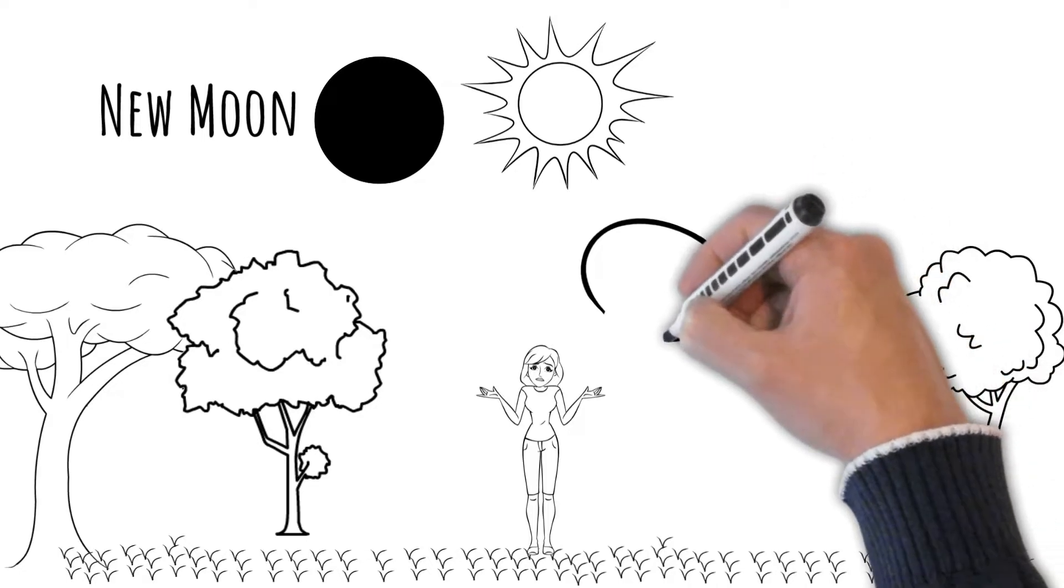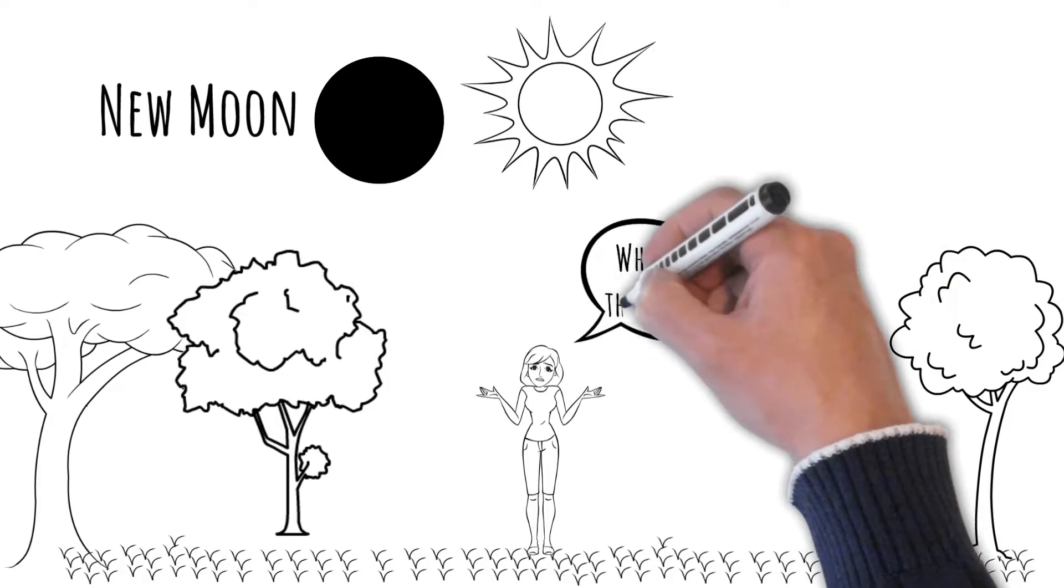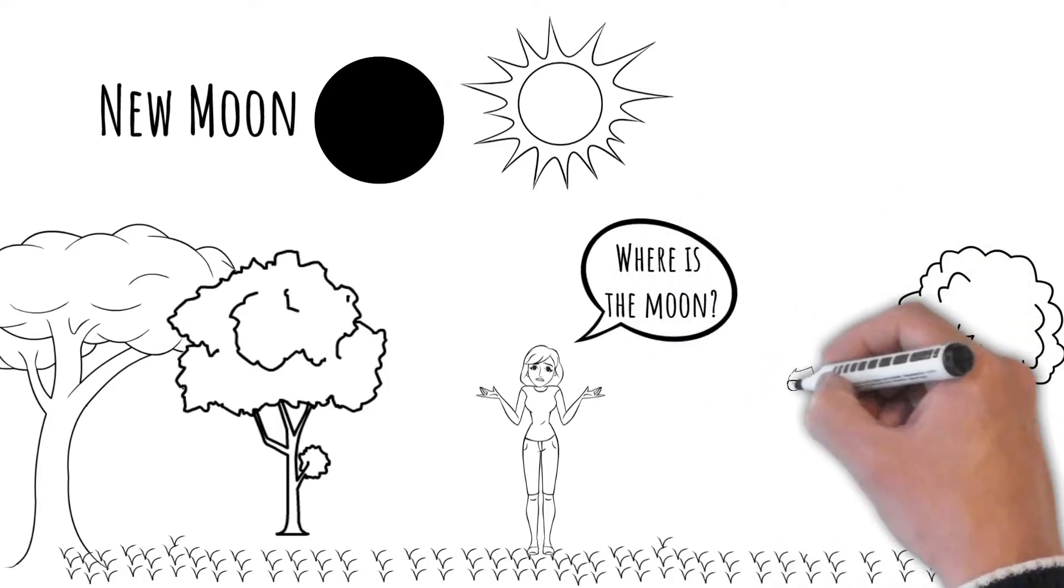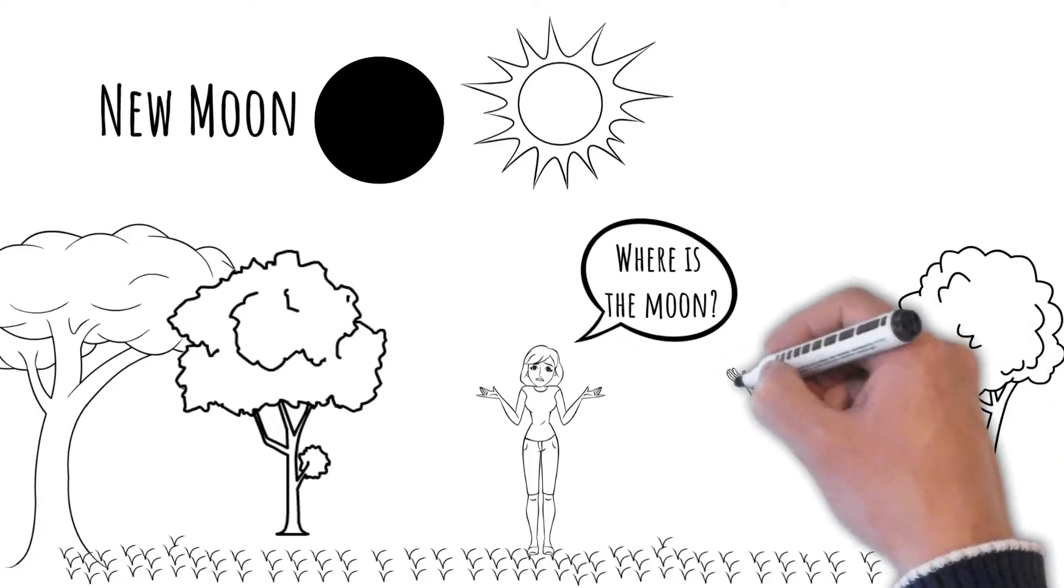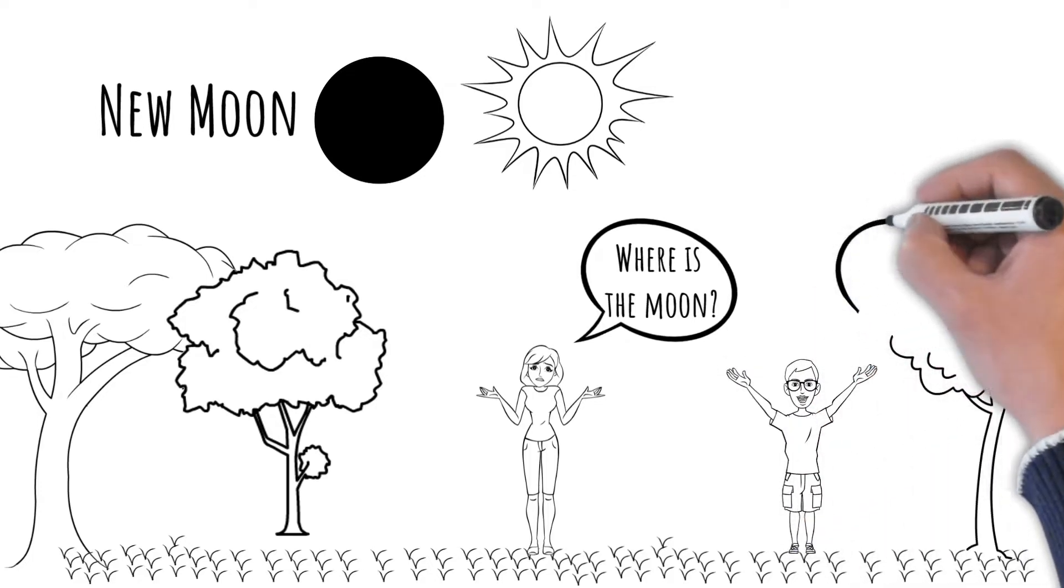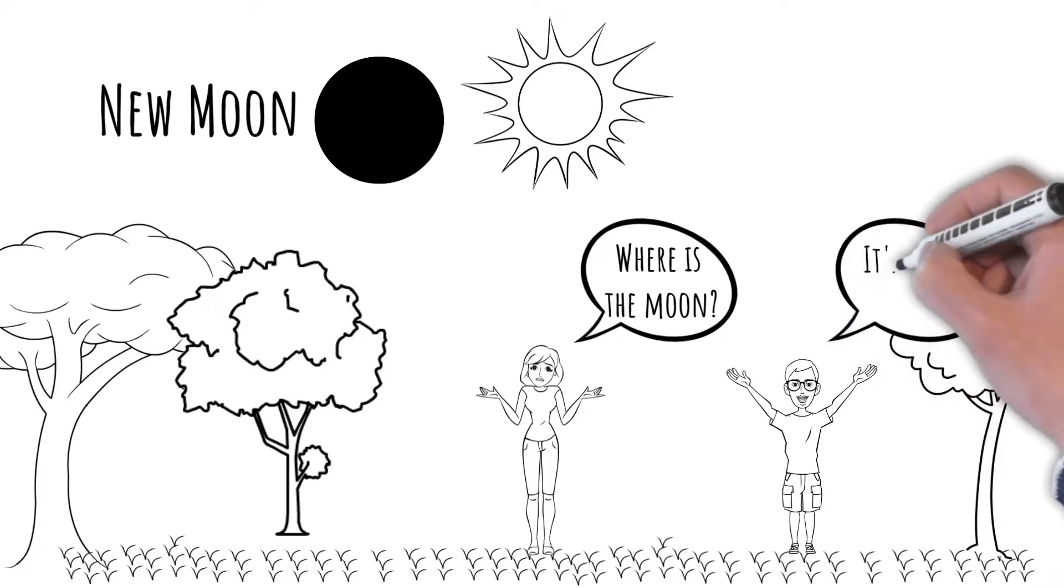Not only is the illuminated side facing away from the Earth, this also means it's up during the day. Remember in this phase the moon doesn't usually pass directly between the Earth and the sun. It only passes near the sun from our perspective here on Earth.